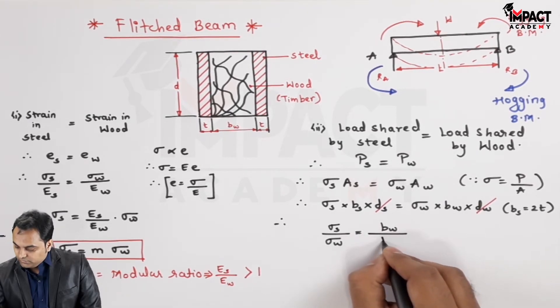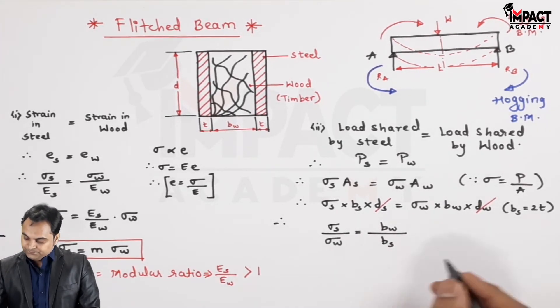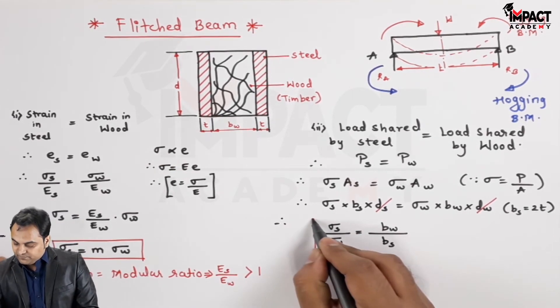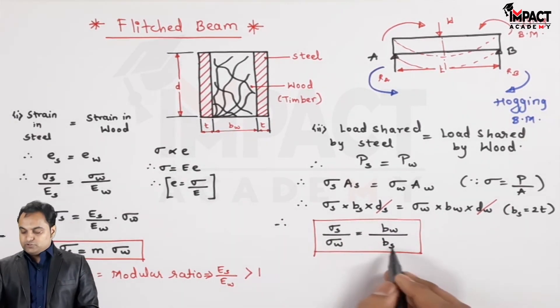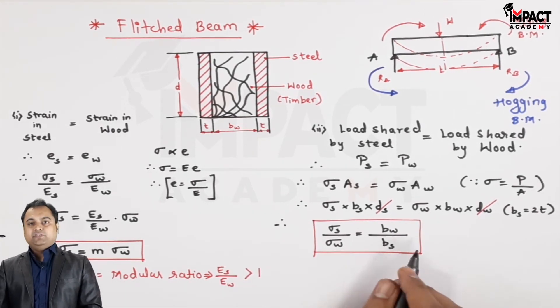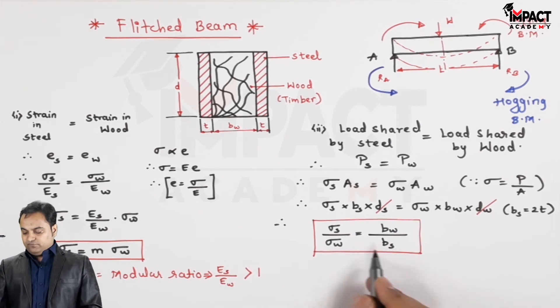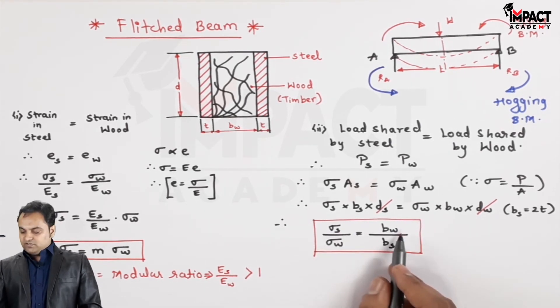and therefore σ_s upon σ_w is equal to b_w upon b_s. So that is another relation in case of flitched beams, that is stress is also inversely proportional to width. An element or the material having less width will have more stress whereas the material having greater width will have less stress.